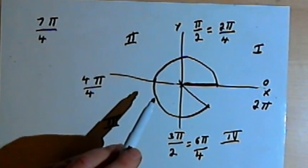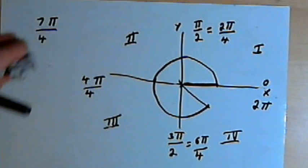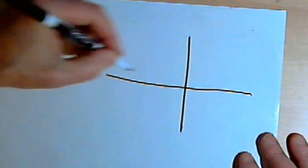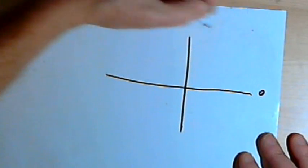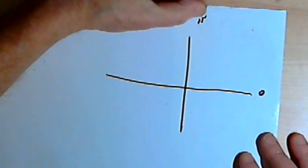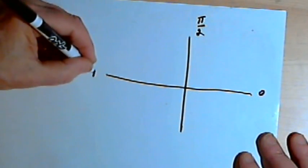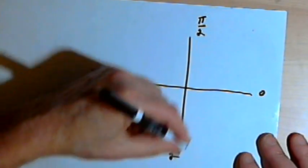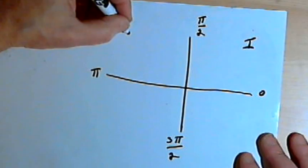Now, we can also have angles that are negative. So let me clean this up, draw that xy axis again, and put some negative angles in. Here's my π over 2 at the top, π, 3π over 2 at the bottom, and the quadrants 1, 2, 3, and 4.